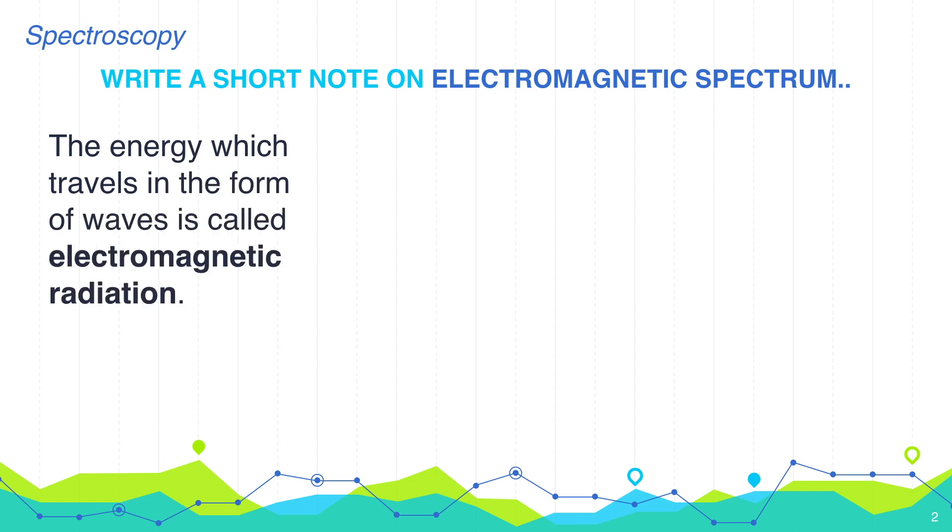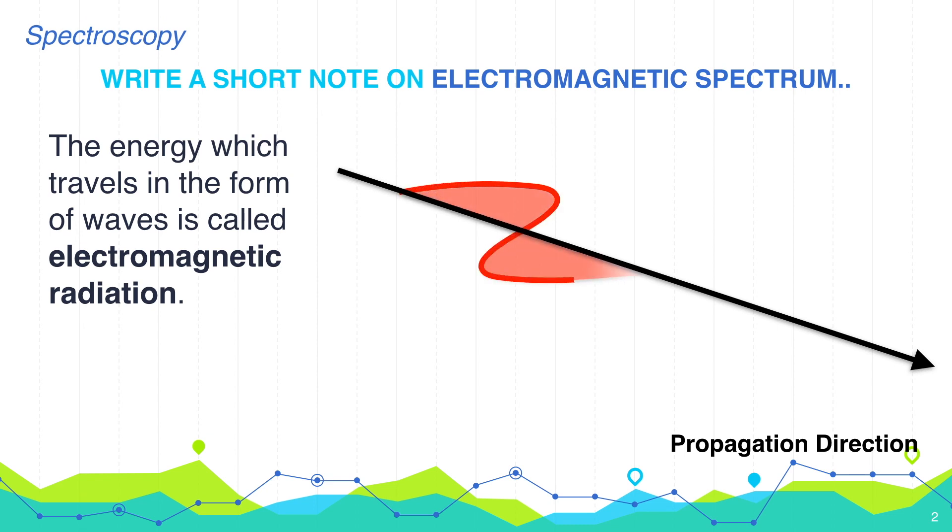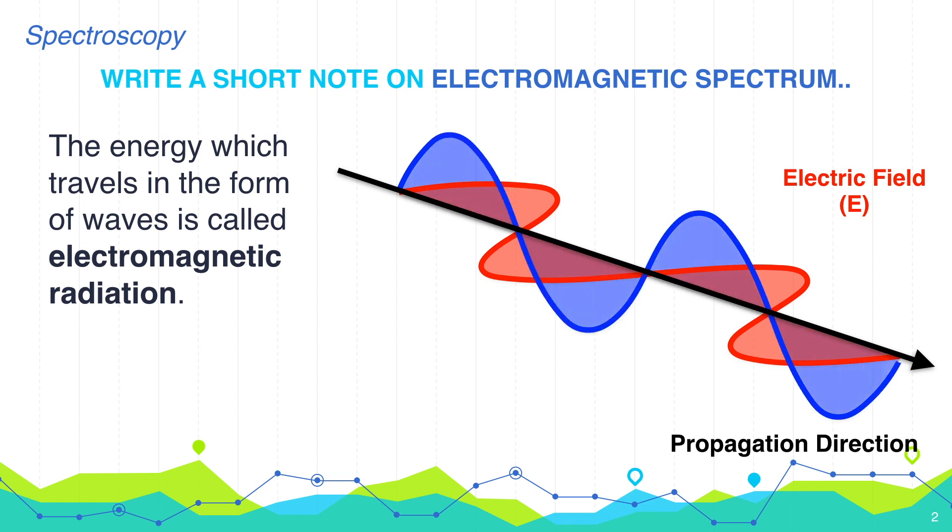Electromagnetic radiations can propagate without the help of any material or medium and this is why electromagnetic radiation can travel in vacuum also. The electromagnetic wave consists of an electric component shown in red color and a magnetic component shown in blue color which oscillates in planes perpendicular to each other and also to the direction of propagation.